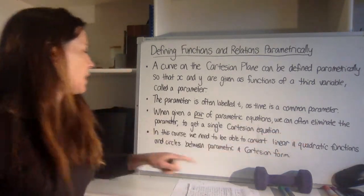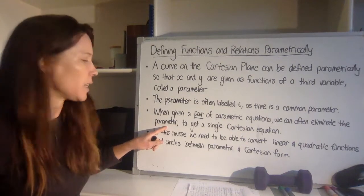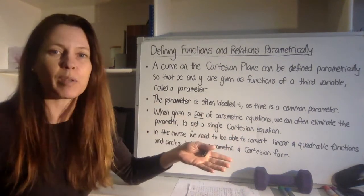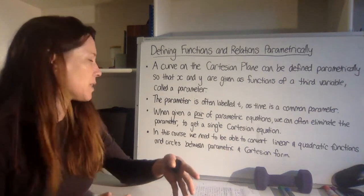We can often actually eliminate the parameter, the t, to get it back to being a single Cartesian equation, in other words, the normal type of equation that we're used to that just has x's and y's in it.